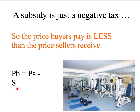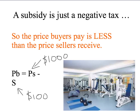We're going to look at the example of a subsidy on gymnasium memberships. The subsidy might be, say, $100 per membership per year. That means that if the seller receives or charges a total price of, say, $1,000 for a gym membership, buyers are only going to pay $1,000 less the subsidy. The price that buyers pay is going to be $900 for a gym membership over the year, in our example. How do buyers only pay $900, but sellers receive $1,000?